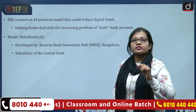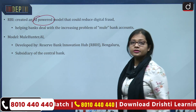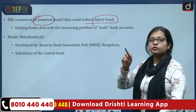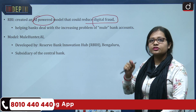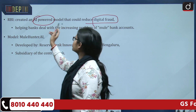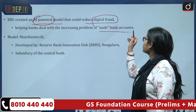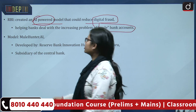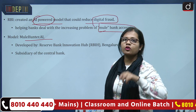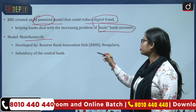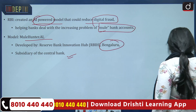Coming back to the news — the Reserve Bank of India has created an AI-powered model that could reduce digital fraud. To reduce the number of digital frauds, the RBI, which is the central bank of India, has developed an artificial intelligence powered model. That model will help banks deal with the increasing problem of mule bank accounts. The name of the model is MuleHunter.ai. It has been developed by the Reserve Bank Innovation Hub, which is situated in Bengaluru and is a subsidiary of the central bank.